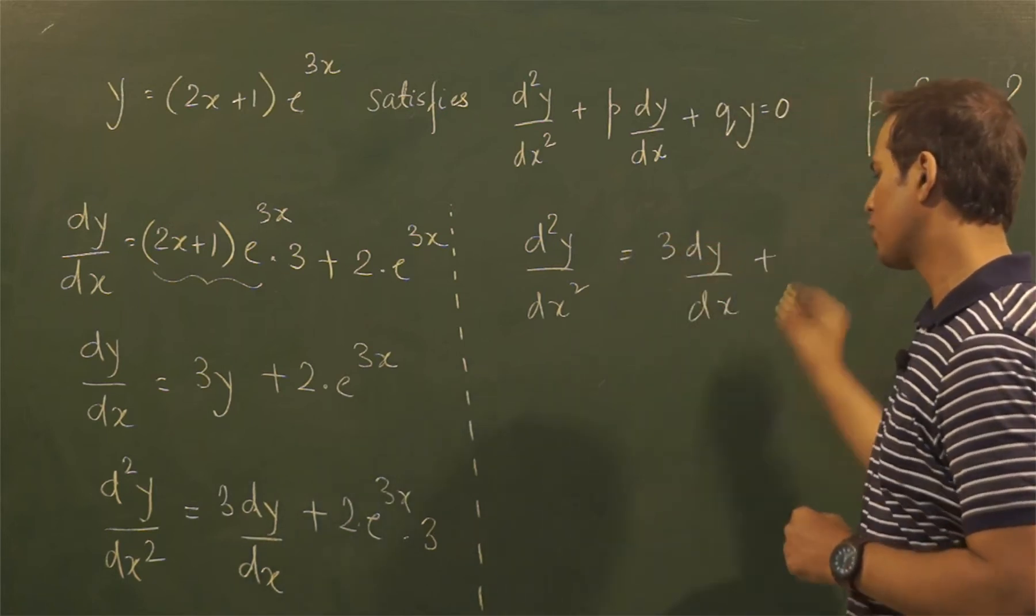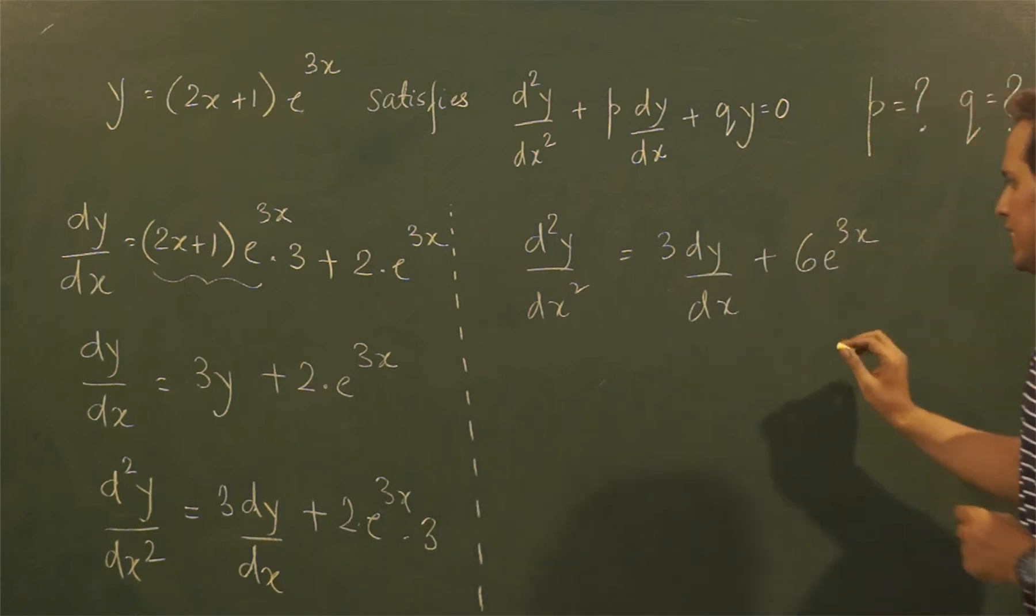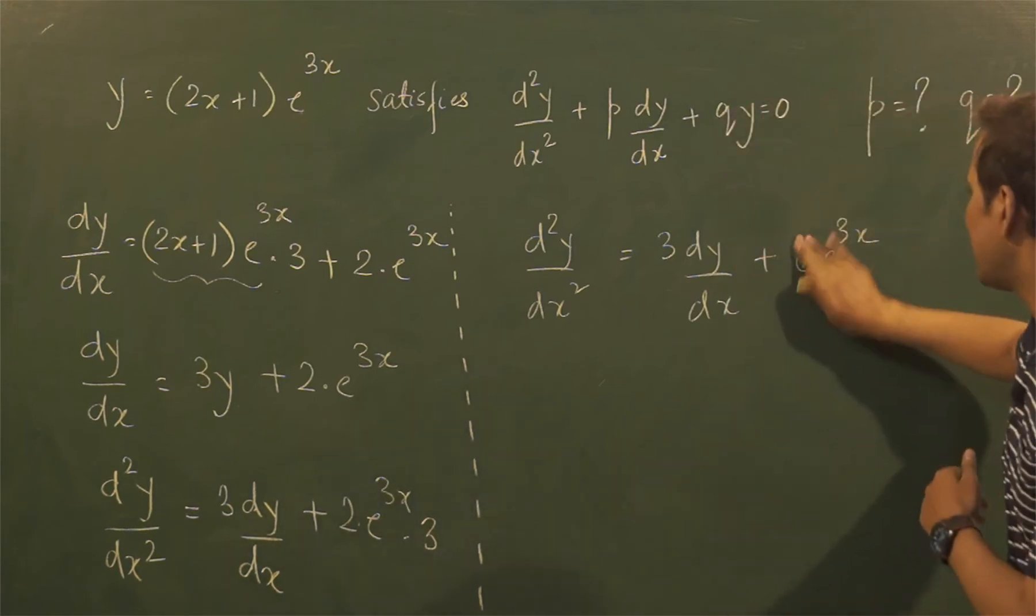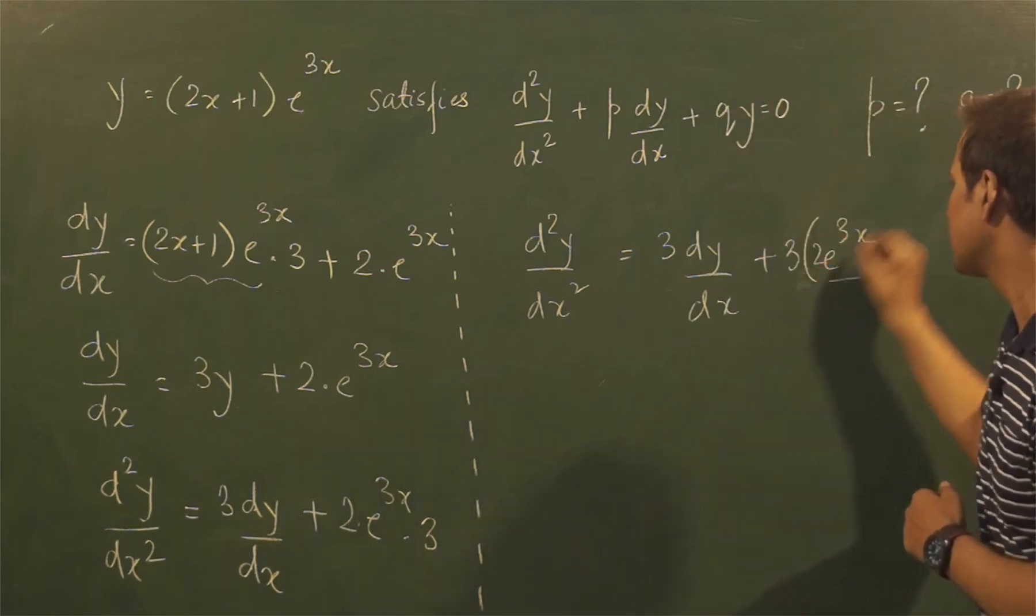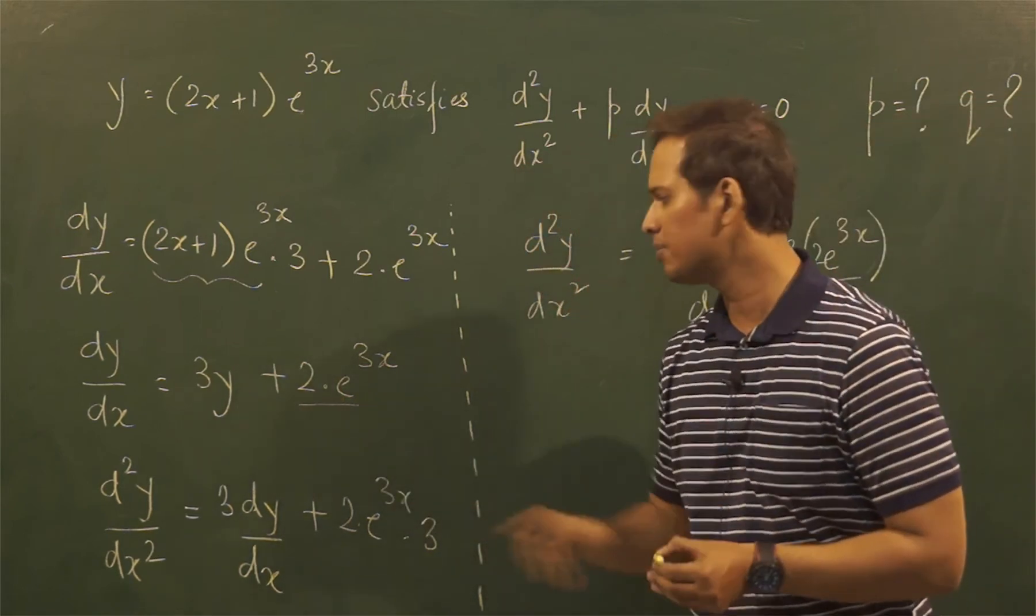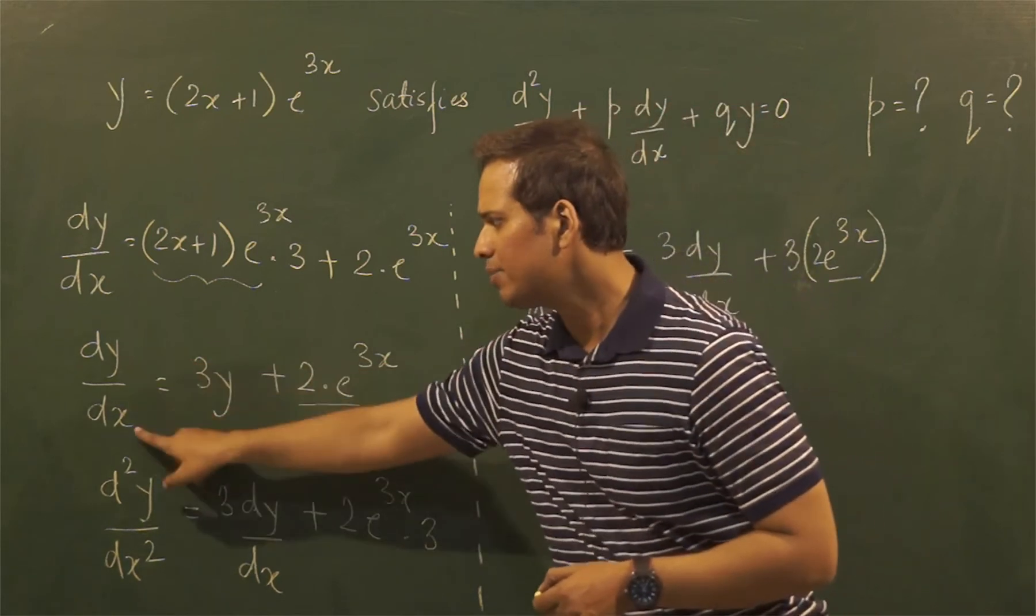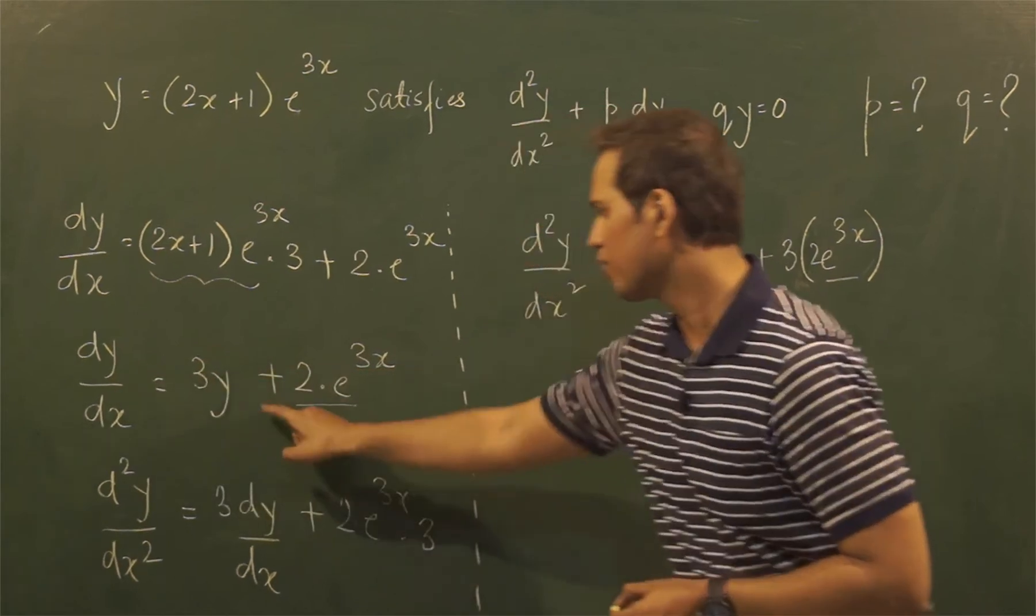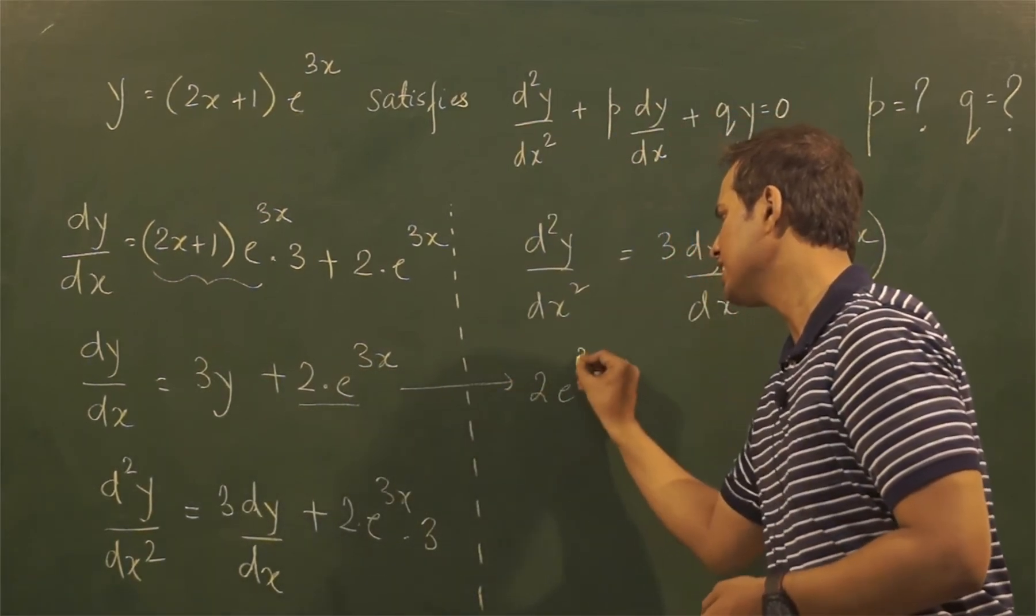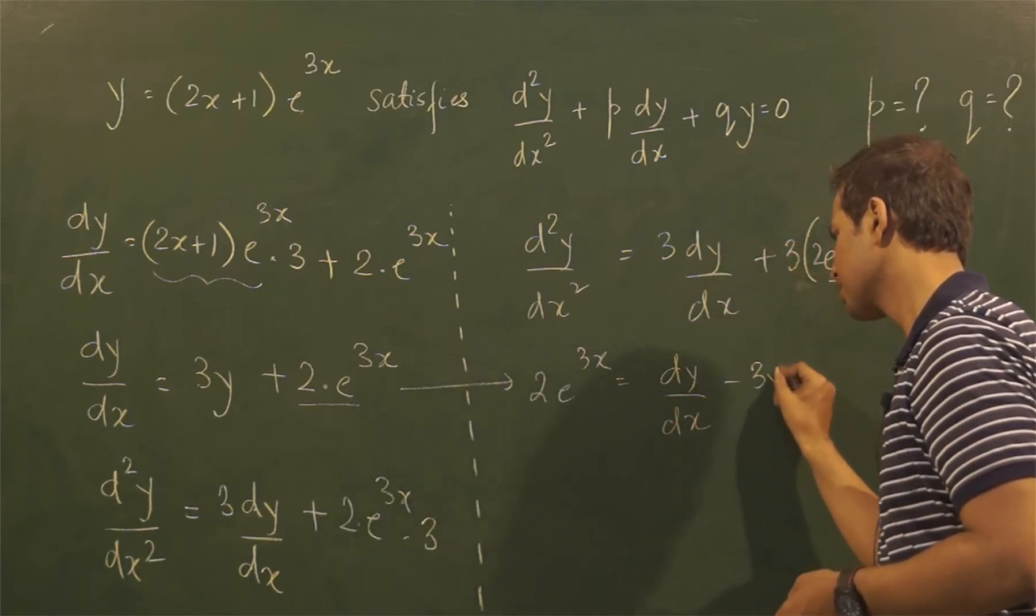So let me just copy this term back over here. Now if you see this term, that is e^(3x), or we can call this as 3 times 2e^(3x). Now you can see 2e^(3x) term is appearing at this stage, which can easily be written as dy/dx minus 3y. So from this step I can write 2e^(3x) as dy/dx minus 3y.